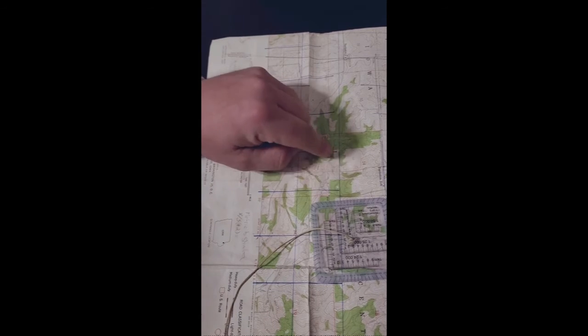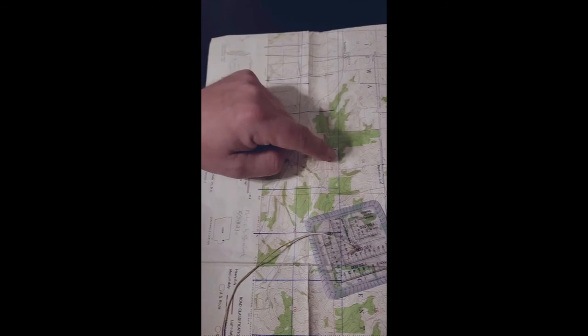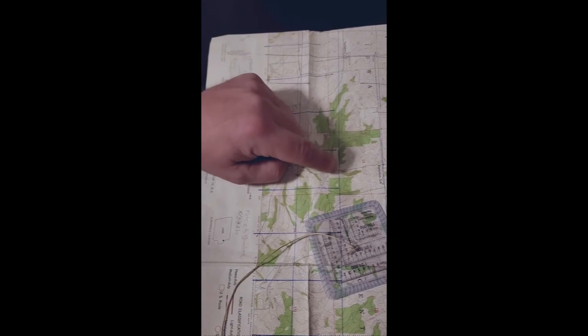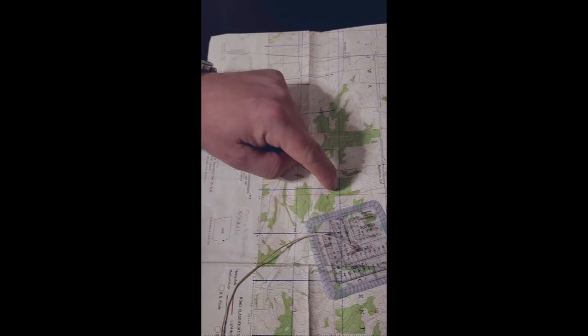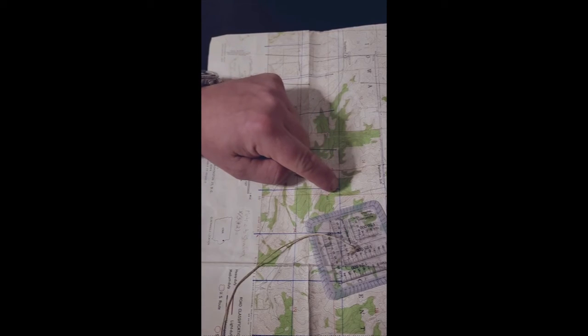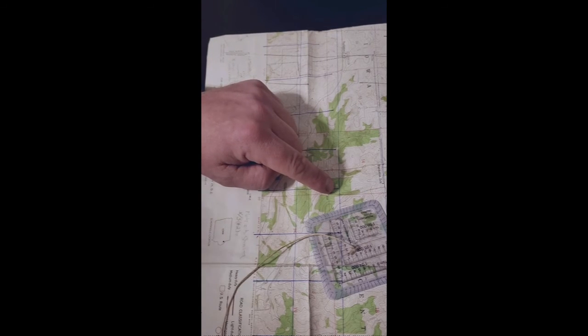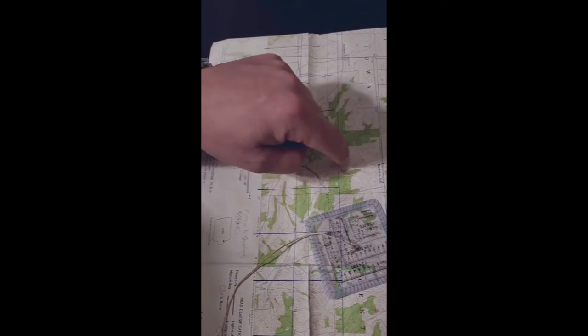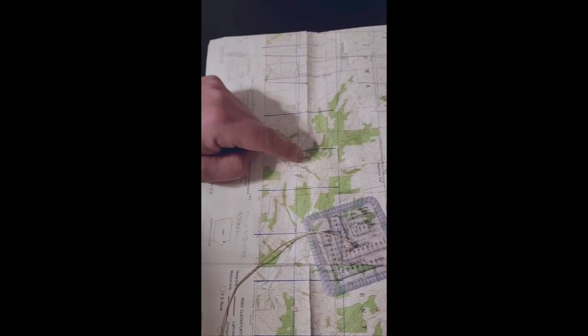If I wanted to tell somebody where I was at, first I'm going to tell them how to get to the grid that I'm in. So if I'm, say I broke my ankle, I can't walk, I'm calling in for a helicopter, I'm going to tell that pilot zone 16, 49 right, 81 up, or 49 easting, 81 northing. And then they're going to be able to say, oh yes, this is the grid, okay, this is where I'm at, I'm somewhere in this grid, right?